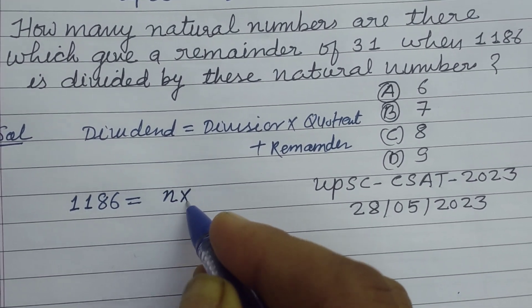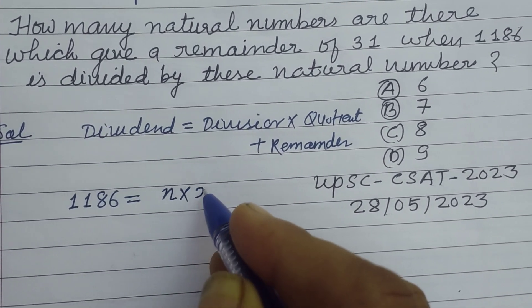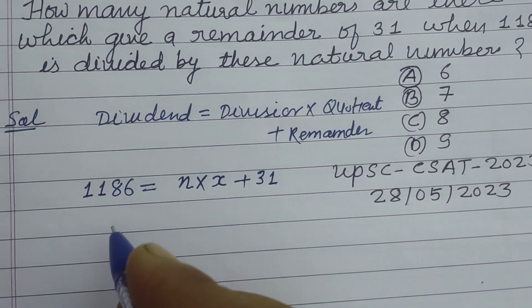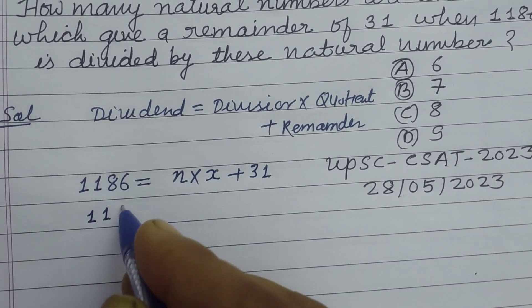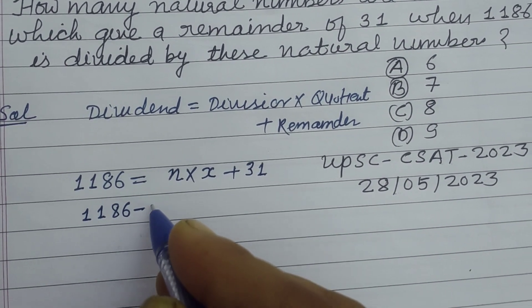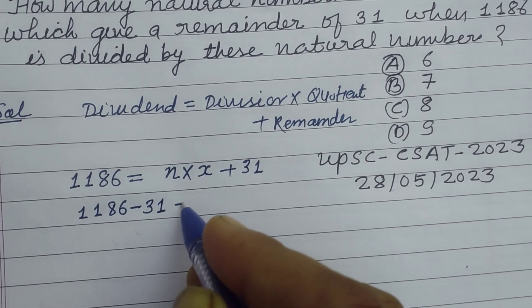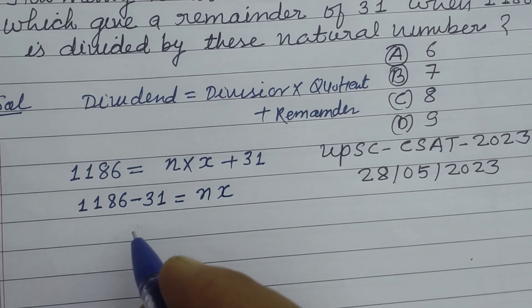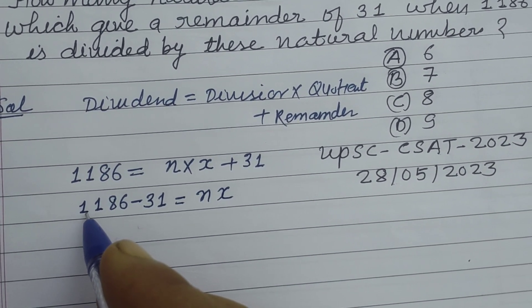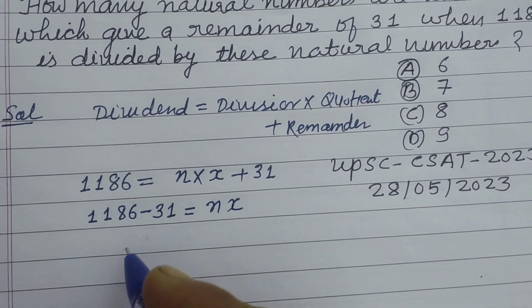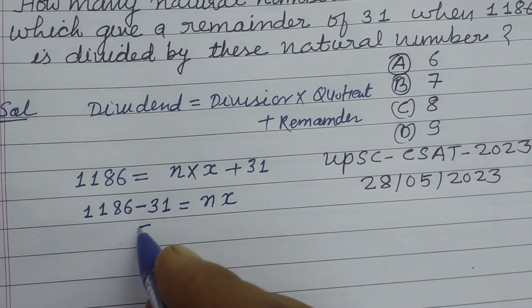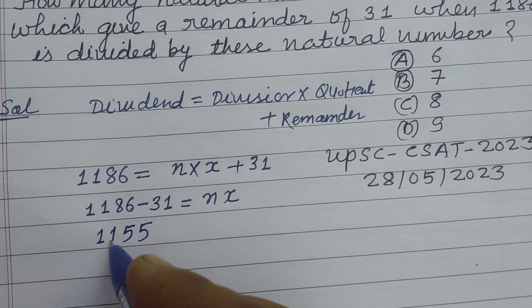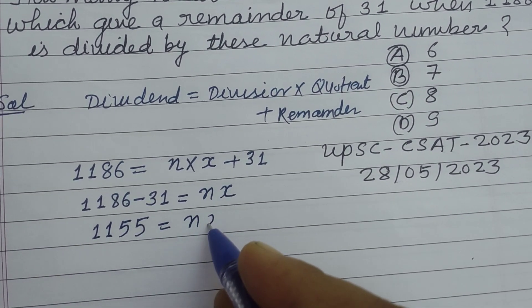First we bring the remainder towards the left side, so it will become negative: 1186 - 31 = N × X. 1186 minus 31: 6 minus 1 is 5, 8 minus 3 is 5, so 1155 = N × X.